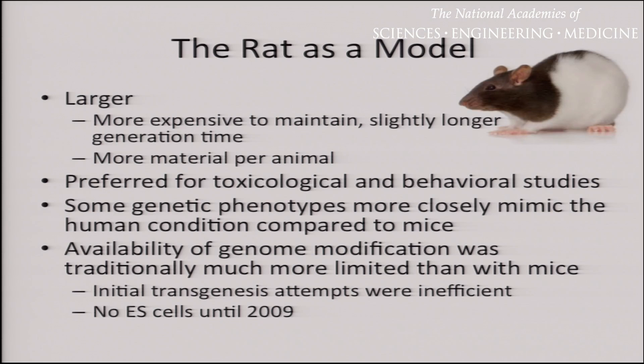However, genome modification was really not available for rats. As Peter alluded to, mice were the only option for mammals for the longest time. You could do transgenesis, but initially it was fairly inefficient, mostly for technical reasons. There were also no embryonic stem cells really available until 2009, so you couldn't do targeted mutagenesis at all.